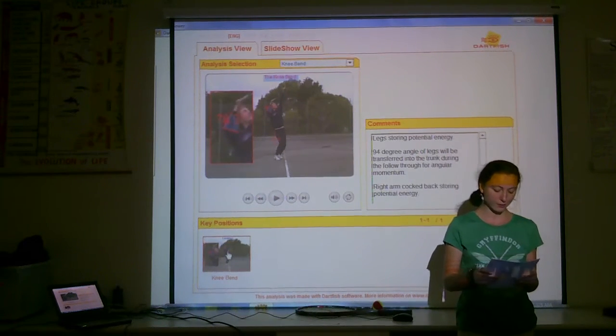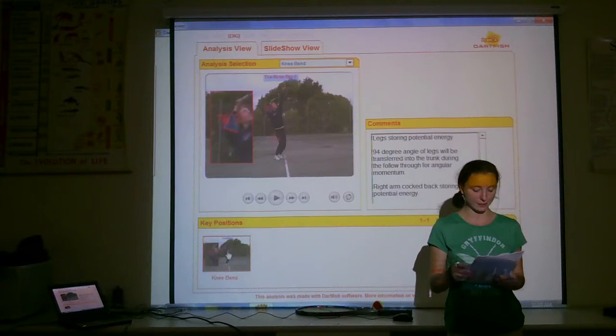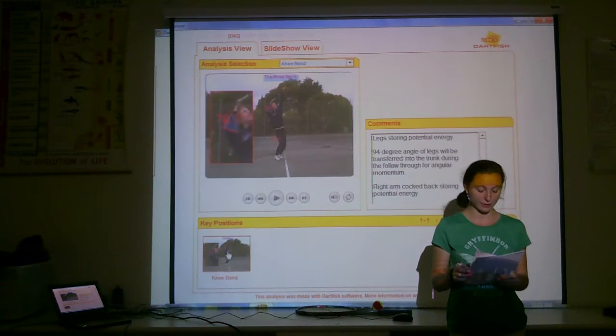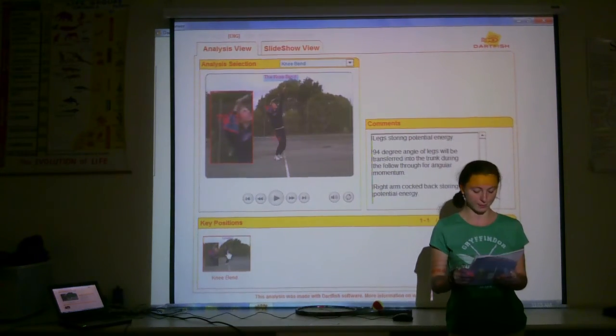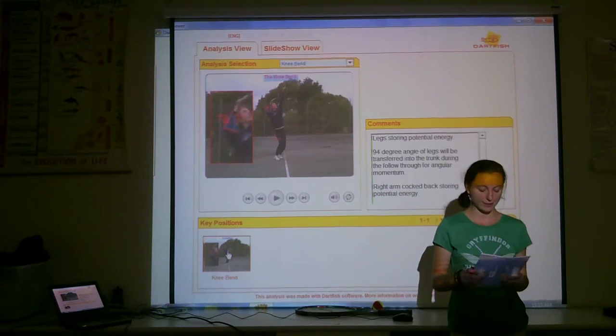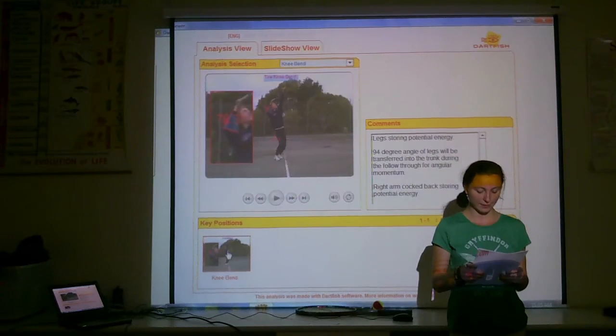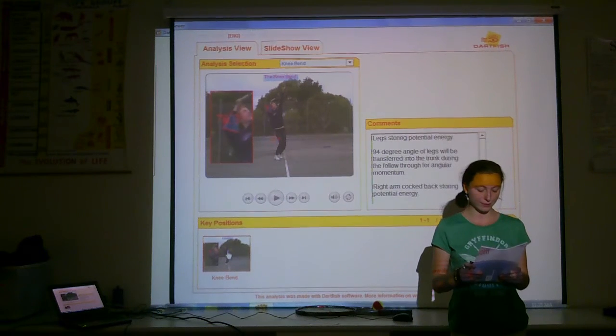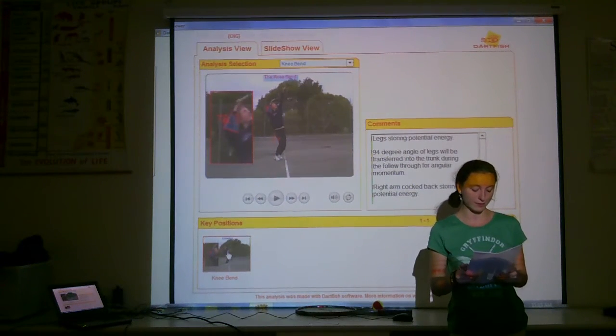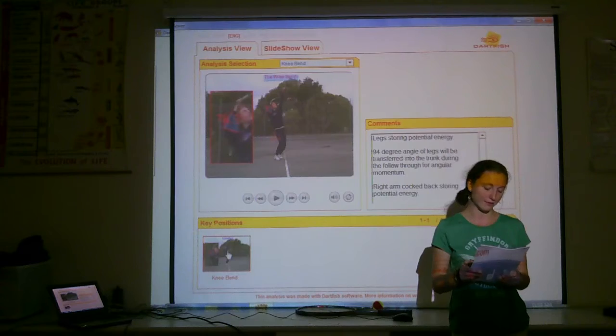The right arm is cocked back, also storing potential energy within the biceps and triceps that will create a force transfer through the racket head and into the tennis ball. This completes the second part of the kinetic chain, the upper arm elevation. The previous movement allowed the individual to accelerate the arm upwards because the trunk was stabilized by the rectus abdominis and the left arm was fully extended.